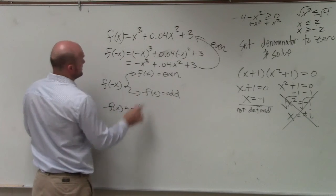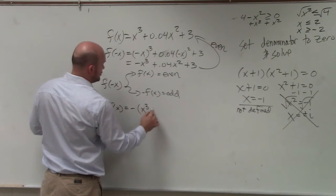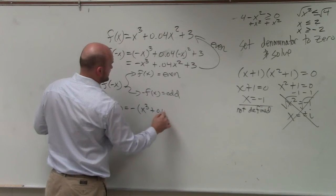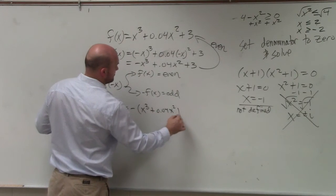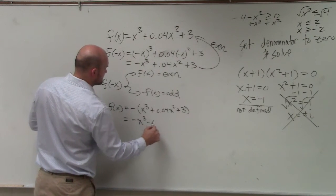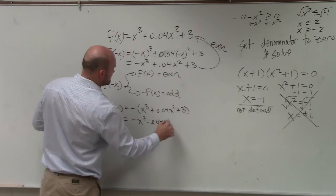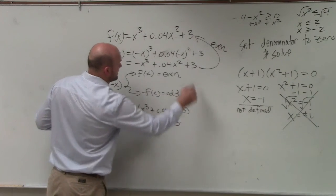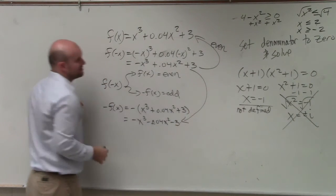We have x cubed plus 0.04x squared plus 3. That becomes negative x cubed minus 0.04x squared minus 3. Is that the same as opposite of negative x?